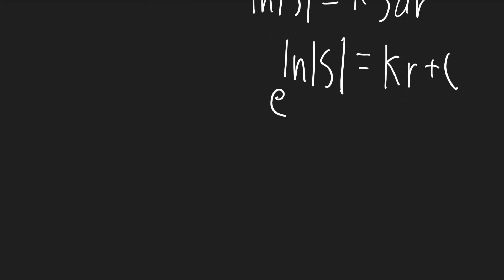Now we can take the exponential of both sides. On the left side, it'll cancel with the natural log. So we'll get s is equal to e to the power of k times r plus c.